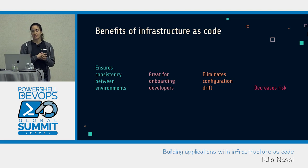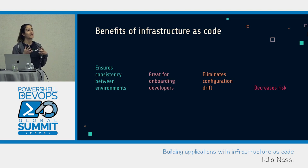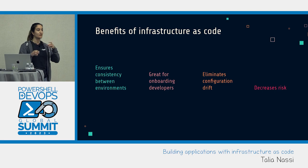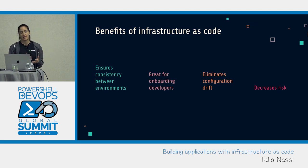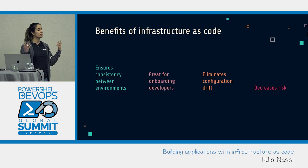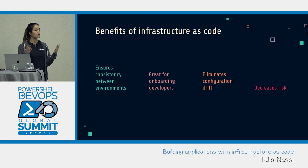Infrastructure as code also decreases risk. Provisioning all of your infrastructure by hand is really risky — it requires a lot of manual work and could be error-prone. What if there's only one person at the company who knows exactly how to connect and configure everything? What if they leave? This really reduces that risk because your infrastructure lives in a code repository, central to everybody. It's a one source of truth that everybody who needs access has access to — visible to your system administrators, your DevOps team, or whoever needs it.